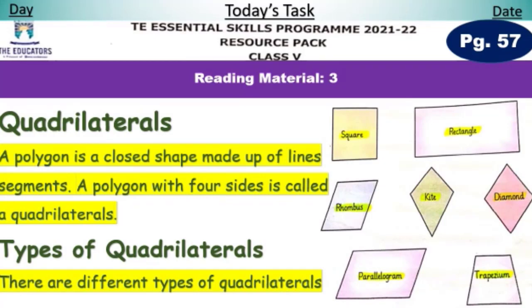Dear students, open resource pack page number 57, reading material 3, quadrilaterals. A polygon is a closed shape made up of line segments. A polygon with four sides is called a quadrilateral.